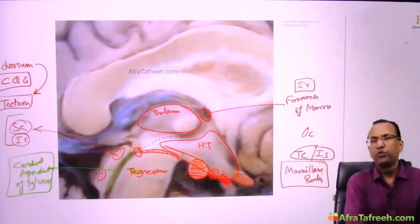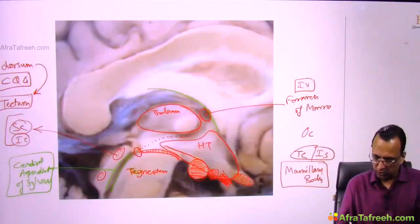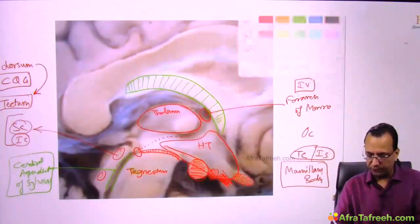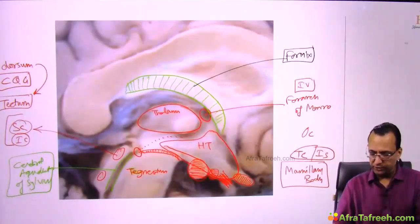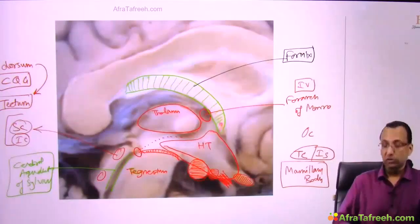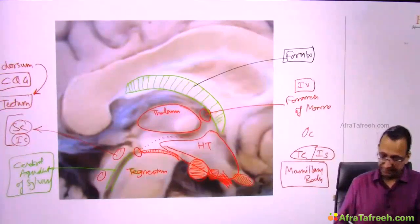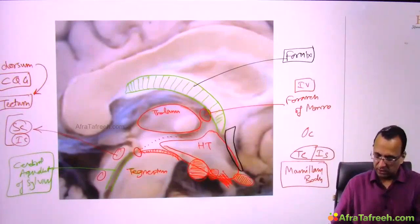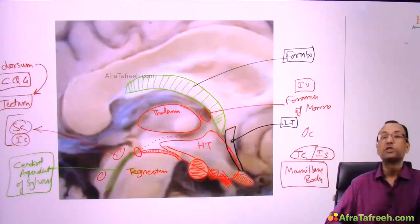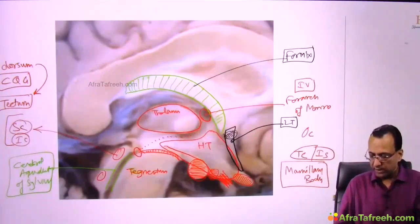The roof of the third ventricle is the fornix — a C-shaped structure. The fornix is not only the roof but also comes anteriorly. Anteriorly there is one more structure called the lamina terminalis. We will draw a diagram to discuss lamina terminalis. Along with lamina terminalis, there is also the anterior commissure.